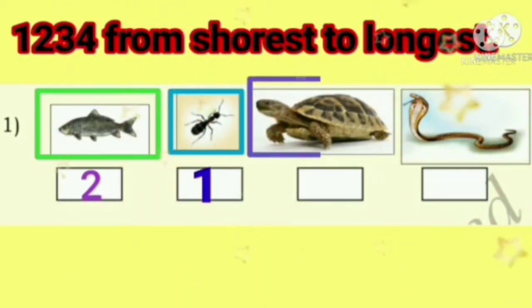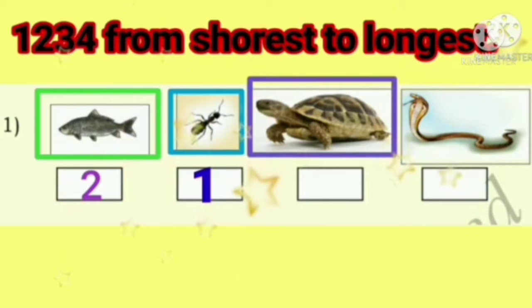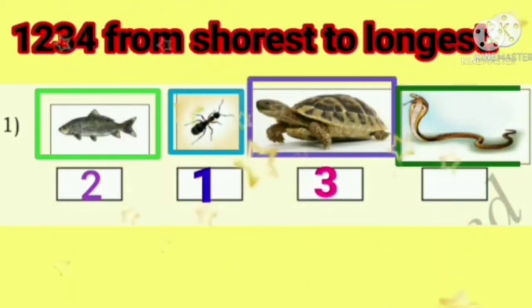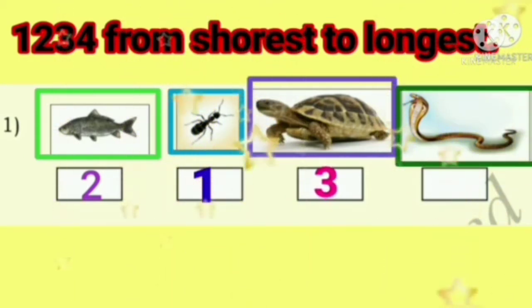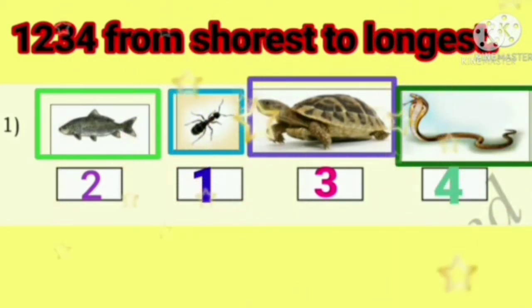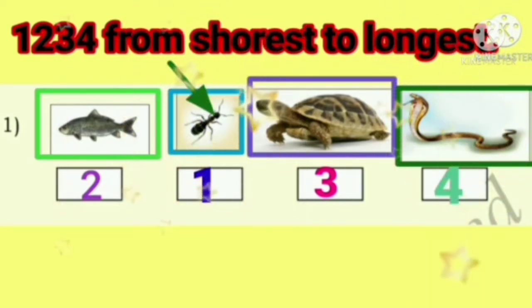Next is the tortoise, so let us write three. Snake is the longest, so let us write four. So here, hand is the shortest and snake is the longest.